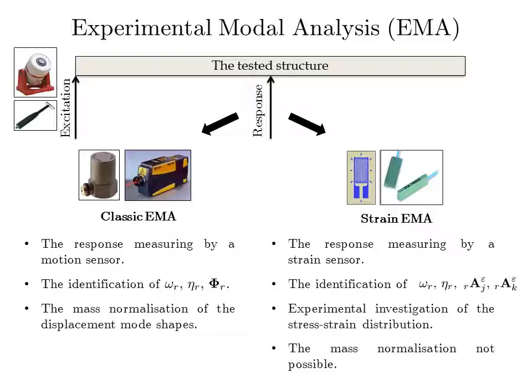A drawback of the strain experimental modal analysis is that mass normalization cannot be performed as in the classic experimental modal analysis. Mass normalization is a scaling procedure of the mode shapes with respect to the orthogonality properties of the modal matrix. In the strain experimental modal analysis, mass normalization is usually performed with the classic experimental modal analysis, which requires the use of a motion sensor. When this is not possible, the mass normalization cannot be performed.